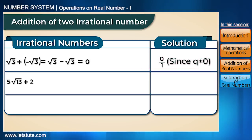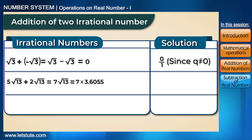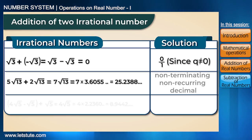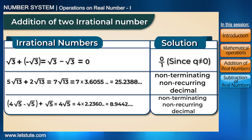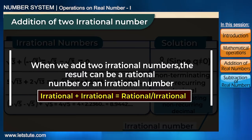Another example: 5 root 13 plus 2 root 13 equals 7 root 13. Since root 13 is approximately 3.6055..., this gives 25.2388... — a non-terminating, non-recurring decimal, which is an irrational number. Thus, when we add two irrational numbers, the result can be rational or irrational.